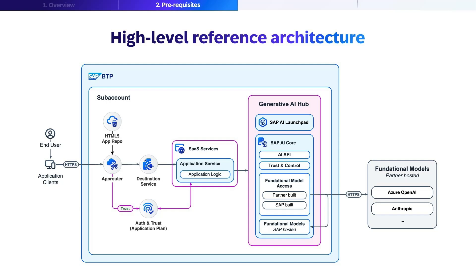Let's examine the high-level reference architecture for accessing generative AI models through SAP BTP. The diagram shows the complete flow from end-user to foundational models. Starting from the left, we see end-users and application clients connecting via HTTPS to the SAP BTP environment within the subaccount. The request first passes through an app router connected to an HTML5 app repository, then flows to a destination service which directs it to the SaaS services containing the application service with the core application logic.